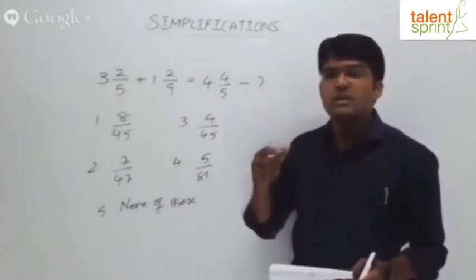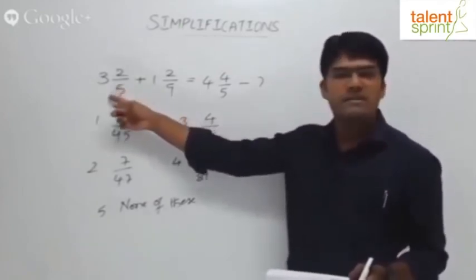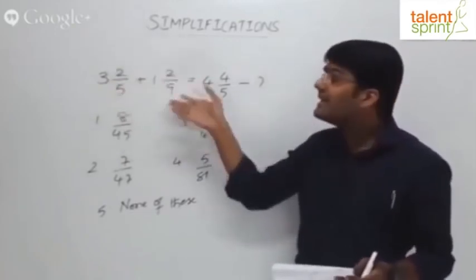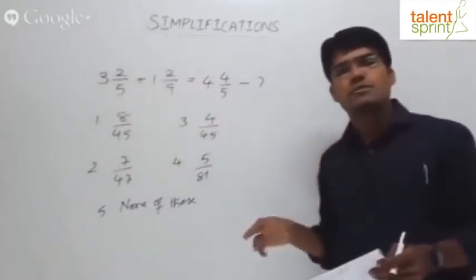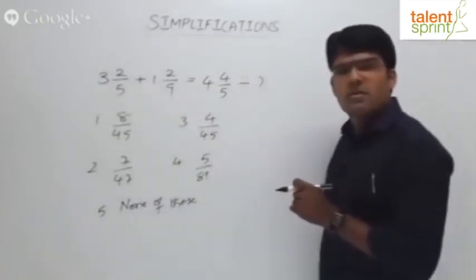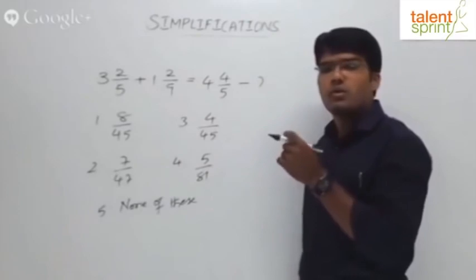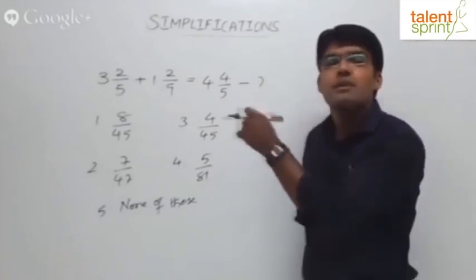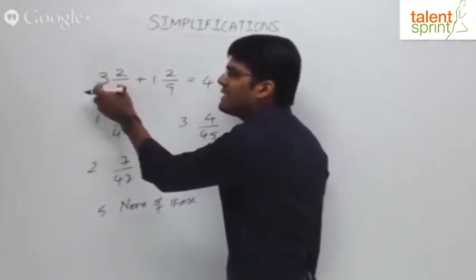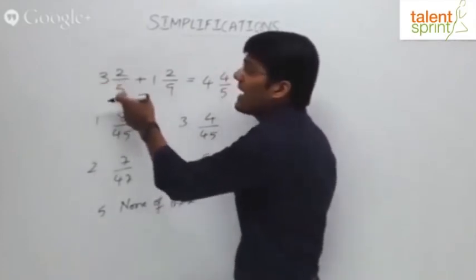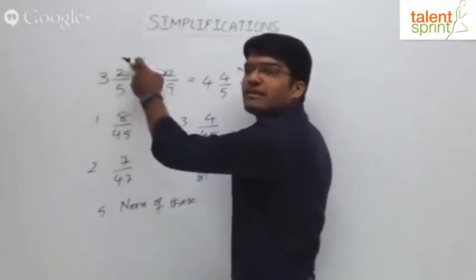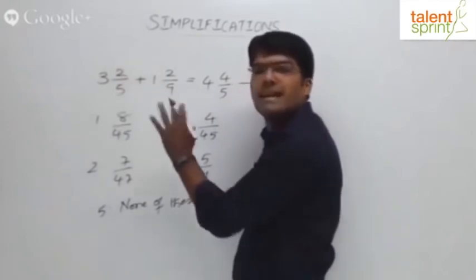Generally while solving these questions, we try to simplify by converting the mixed fraction into an improper fraction. Let's look at that procedure. For example, 3 and 2/5 — multiply the integer part with the denominator: 3 into 5 is 15, then add the numerator: 15 plus 2 is 17. So 3 and 2/5 becomes 17/5.